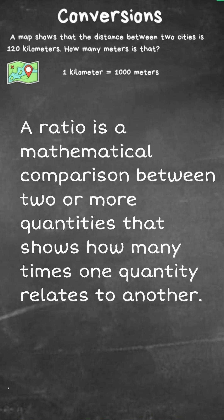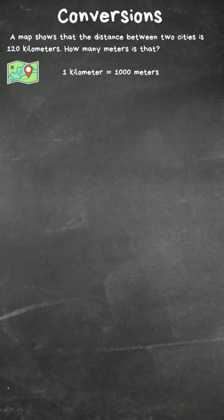Let's use ratios in order to solve this conversion question. It says a map shows that the distance between two cities is 120 kilometers. How many meters is that? And our conversion factor is one kilometer equals 1,000 meters.